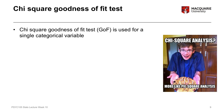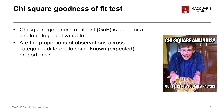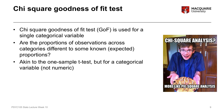The chi-square goodness of fit test is appropriate for a single categorical variable — one variable at a time — and what this test is doing is seeing whether the proportion of observations across each of the categories of that single variable are different to some known or expected proportions. It's essentially the same kind of thing as the one-sample t-test, but for a categorical variable, not a numeric variable.